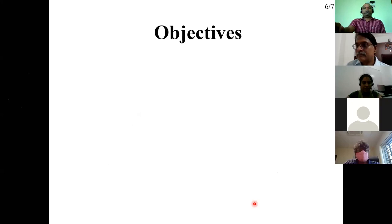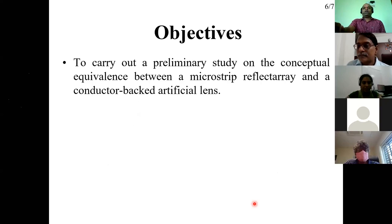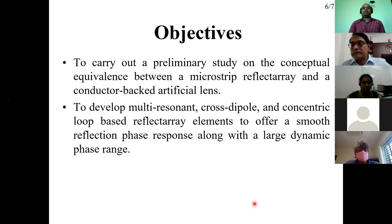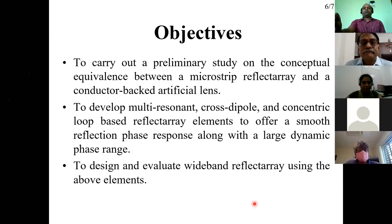Based on this brief introduction, we move to the objectives. First is a preliminary study on the conceptual equivalence between the microstrip reflectarray and the conductor-backed artificial lens. Second is the design of elements to offer a smooth phase response — the major requirement — along with a large dynamic phase range. From the literature, multi-resonant and cross-loop-based elements are widely used. The second objective is to evaluate the reflectarray by employing five element types, realize the wideband reflectarray, and characterize them experimentally.